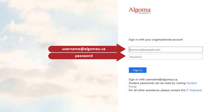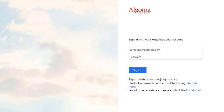Your Algoma U username is usually the first letter of your first name plus your last name, all one word, at algomau.ca. With this information entered, you can click the blue submit button and you will be brought to the Algoma University Brightspace home page.